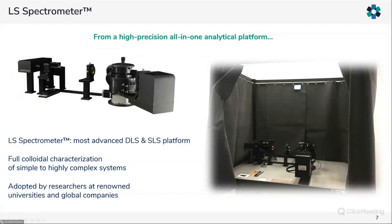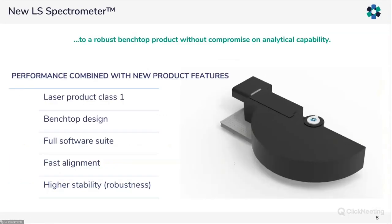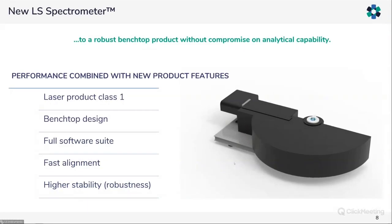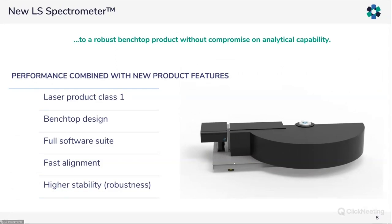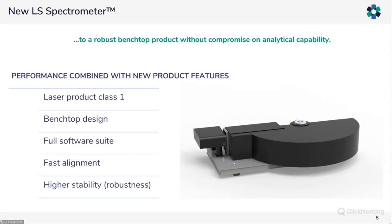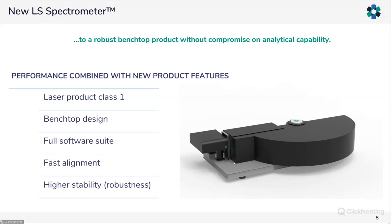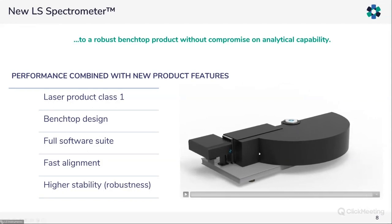The legacy of the LS Spectrometer also involved an open design, which sometimes required laser curtains and installation on an optical table. As of today, we are proud to announce that while keeping all the analytical capabilities, we have reduced these restrictions and are now offering a fully robust benchtop product without compromising any of the instrument's power. This new closed design enables laser class 1 operation, and the instrument does not require installation on any specific equipment — any standard lab bench can be used.